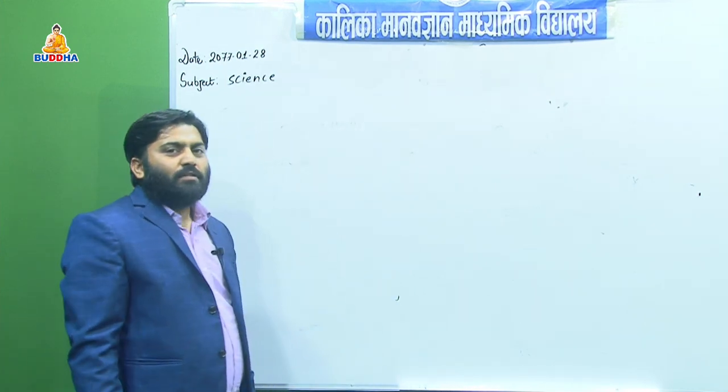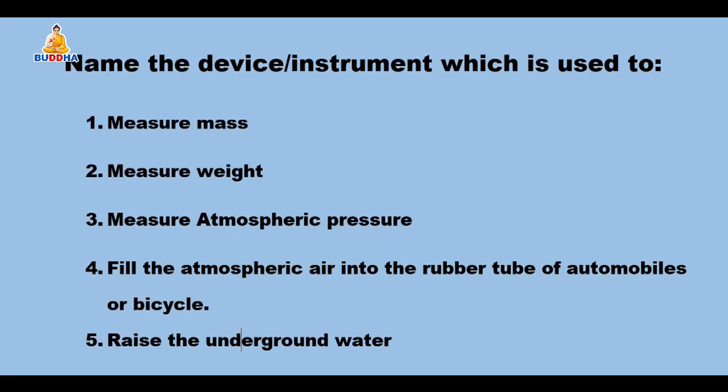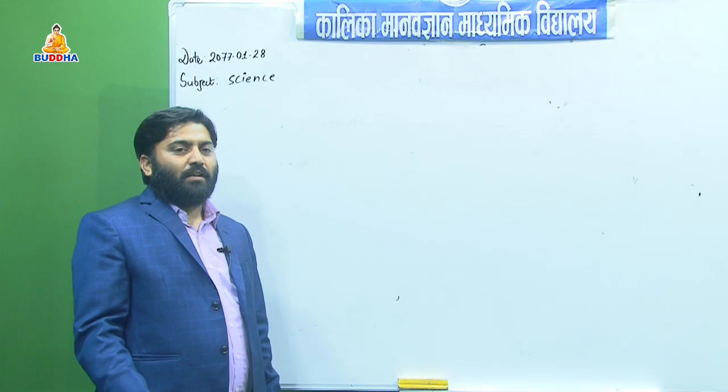Now let us go to the next question pattern: name the device or instrument which is used to do the following. The device used to measure mass is the beam balance. The device used to measure weight is the spring balance. The device used to measure atmospheric pressure is the mercury barometer. The device used to fill atmospheric air into the rubber tube of automobiles or bicycles is the air pump or bicycle pump. The device used to raise underground water is the water pump.